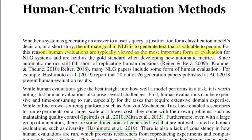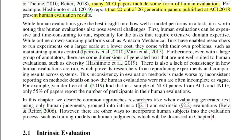Since generated text will ultimately be consumed by humans — either directly or indirectly — human evaluations are typically viewed as the most important form of evaluation and are considered the gold standard, even when you're also using automatic metrics like ROUGE or BLEU. In fact, out of 2620 papers published at ACL 2018, most included some form of human evaluation, giving extra validation to results since most automatic metrics rely on similarity measures at the vector or phrase-overlap level.